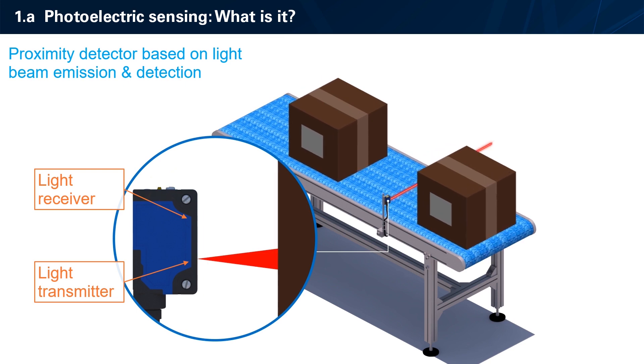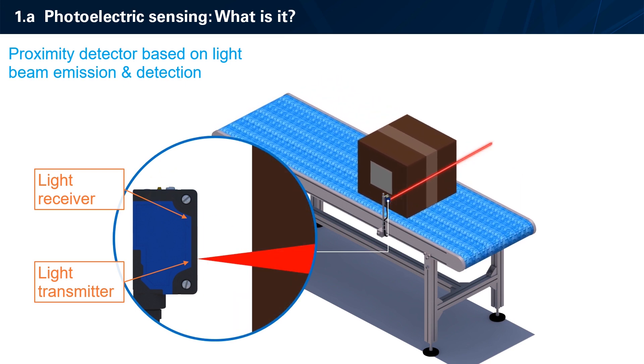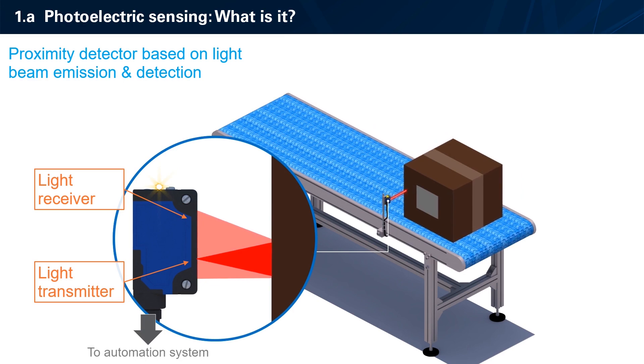The photoelectric sensor makes the information of the presence or absence of object available for the automation system.